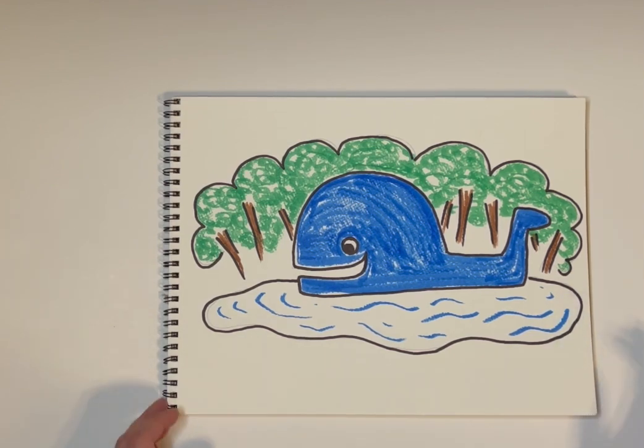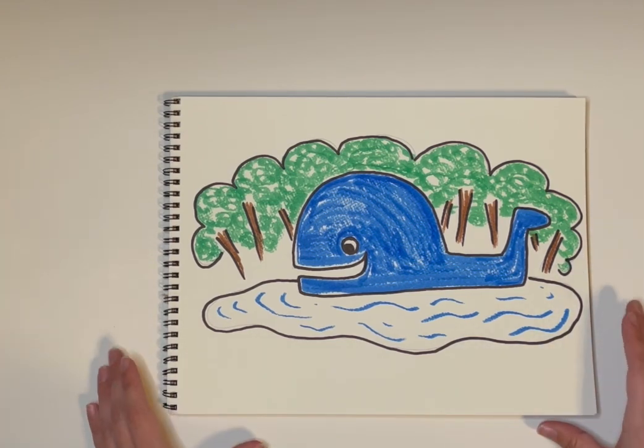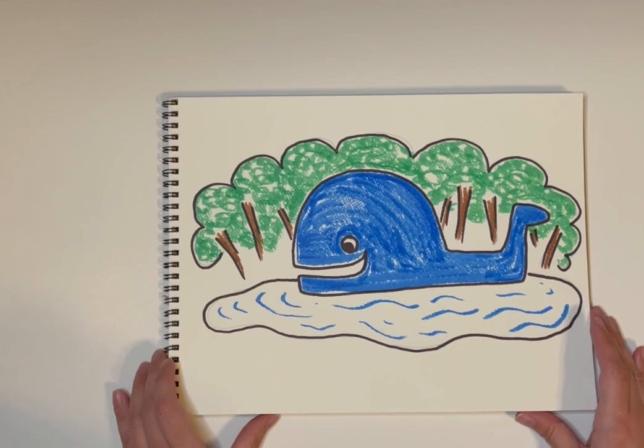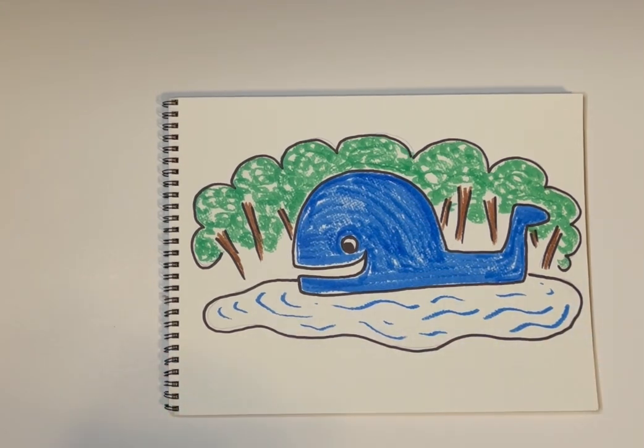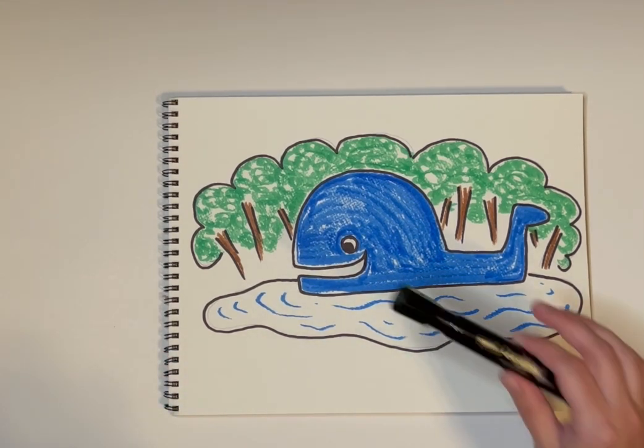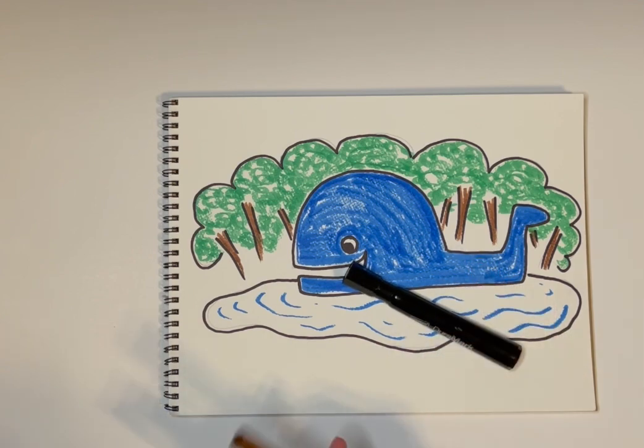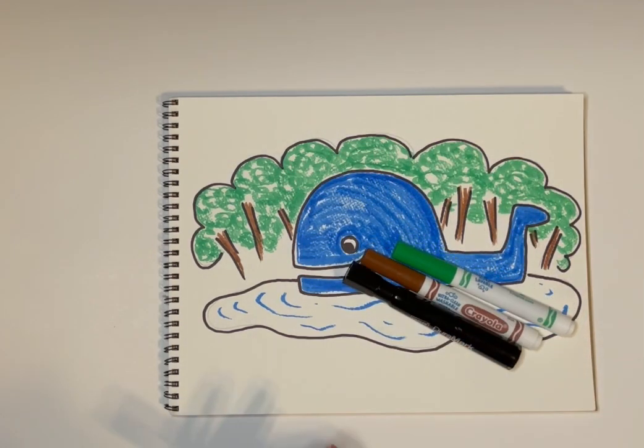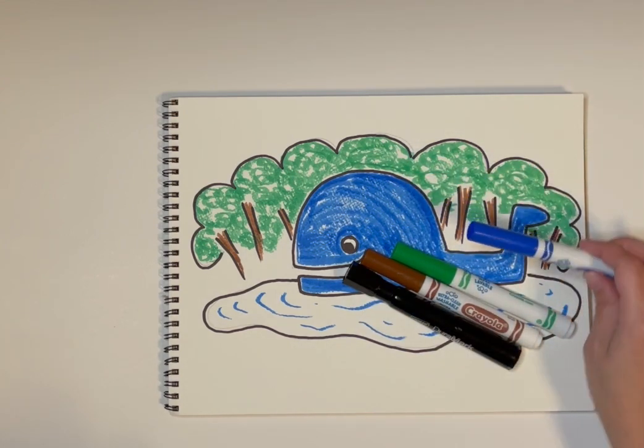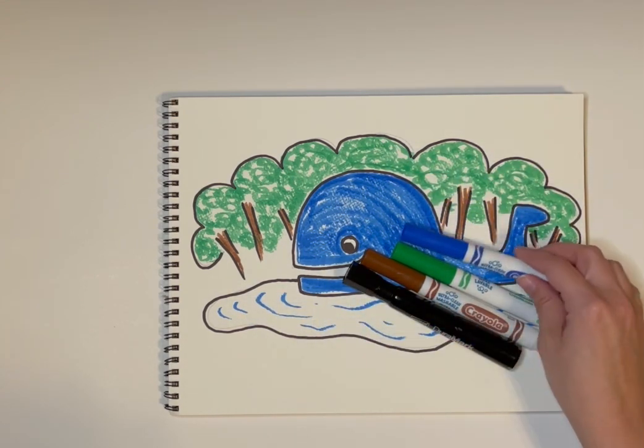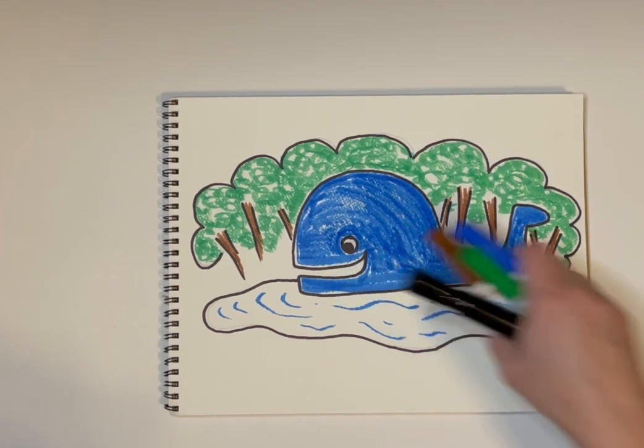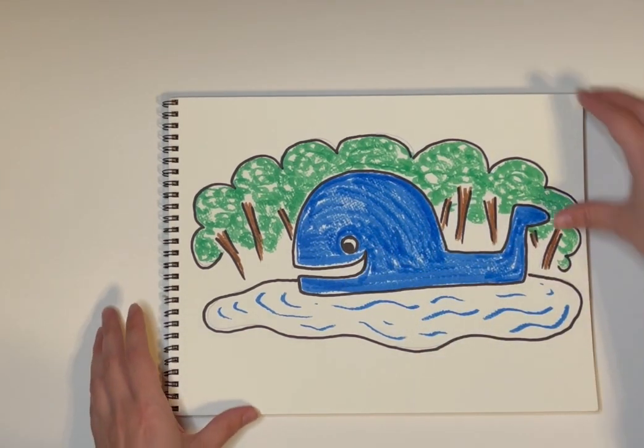So this is what it's going to look like when it's finished. I kept it really simple. I'm only using a black marker, brown for the tree trunks, green for the trees, and then blue of course for my whale and a little bit of blue for the water that it's sitting in there in Catoosa. So we're gonna take a piece of paper. I'm gonna flip this one over.